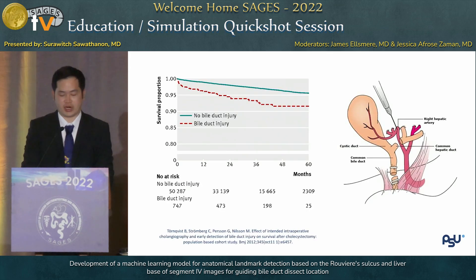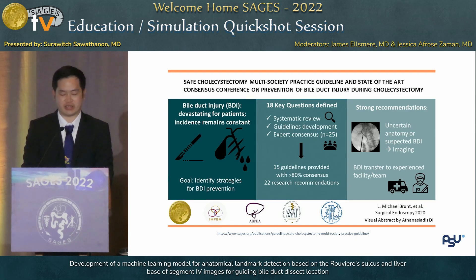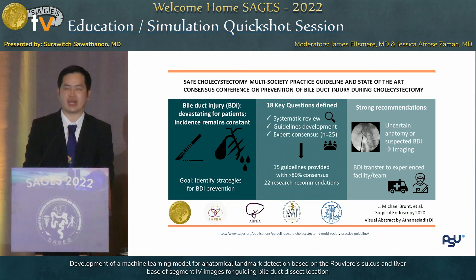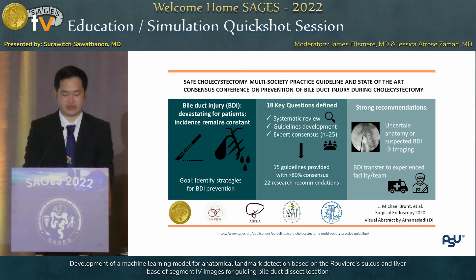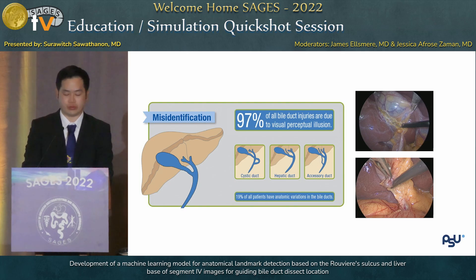As you are aware, bile duct injury has a detrimental effect on patient survival and decreases quality of life. Numerous international organizations offer programs or guidelines for lowering the bile duct injury rate. However, the incidence continues to be significant. The primary mechanism causing bile duct injury is the visual perception illusion.